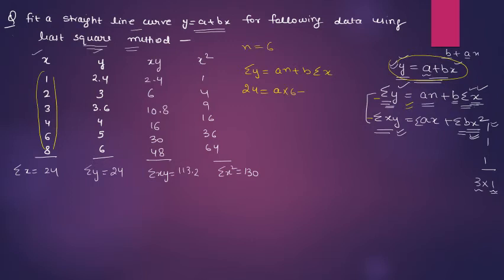So 24 equals 6a plus b times sigma x. Sigma x is 24. That means 6a plus 24b equals 24. You can simplify it by dividing by 6: a plus 4b equals 4. This is your first equation.